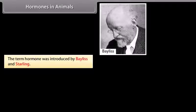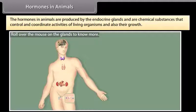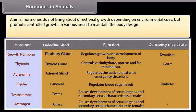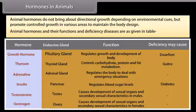The term hormone was introduced by Bayliss and Starling. Hormones in animals are produced by the endocrine glands and are chemical substances that control and coordinate activities of living organisms and also their growth. Animal hormones do not bring about directional growth depending on environmental cues, but promote controlled growth in various areas to maintain the body design. Animal hormones and their functions and deficiency diseases are as given in the table.